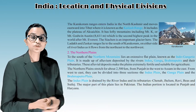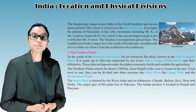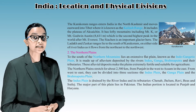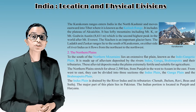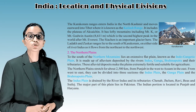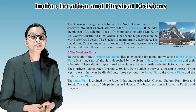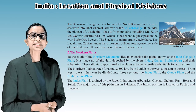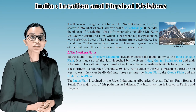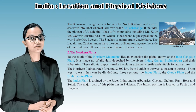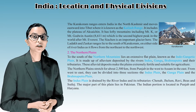The Karakoram range enters India in north Kashmir and moves eastward into Tibet, where it is known as the Kailash range. It includes the plateau of Aksai Chin. It has lofty mountains including Mount K2, or Mount Godwin-Austen (8,611 meters), which is the second highest peak in the world after Mount Everest. The Siachen is an important glacier here. The Ladakh and Zaskar ranges lie to the south of the Karakoram, on the other side of River Indus.